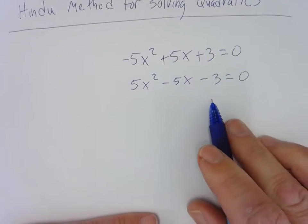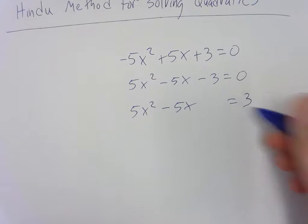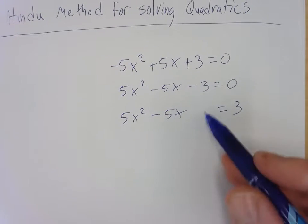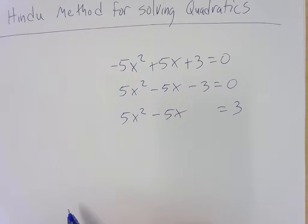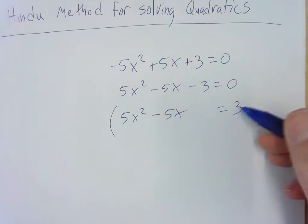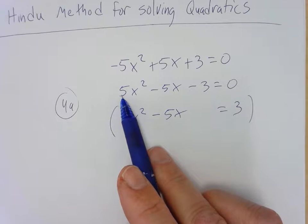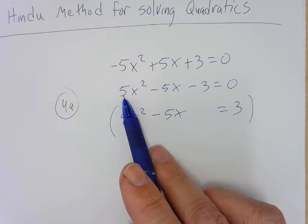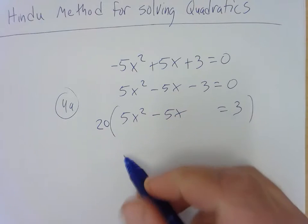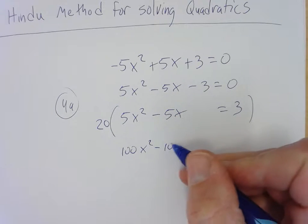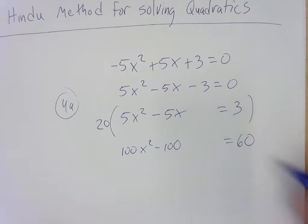And then we're going to put it in the form that it was in the book. So I move the three over. All right. Now I'm going to complete the square in this. And what's cool about this, you don't have to have this being one. You can just leave it as five. So what you do is you multiply everything by four times a. So we're going to multiply everything by, a is five. So we're going to multiply everything by 20. So everything gets multiplied by 20. So it'd be 100 X squared minus 100. Ooh, that's an easy thing to multiply by. And then over here, I get 60.